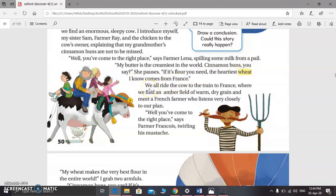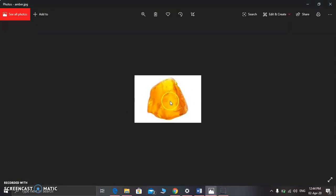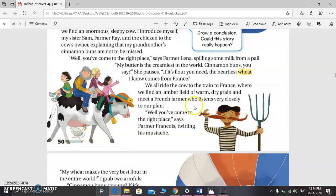So the children all rode the cow. We all ride the cow to the train to France, where we find an amber field. Amber is a yellowish stone. Here, the color of the field was amber—amber field, the dry grain—and meet a French farmer who listens very closely to our plan.